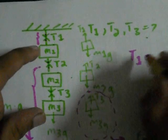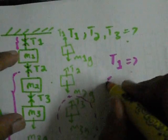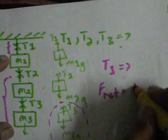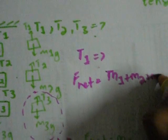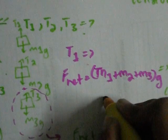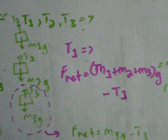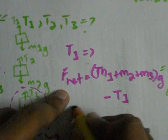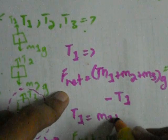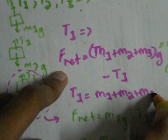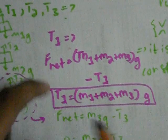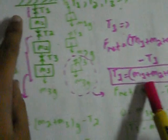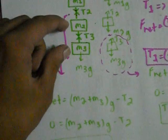For calculating T1, we will see F net is equal to M1 plus M2 plus M3G minus T1. Since F net is zero, T1 is equal to M1 plus M2 plus M3G. So here we get the solution for our answer. T1 is M1 plus M2 plus M3G, T2 is M2 plus M3G, and T3 is M3G.